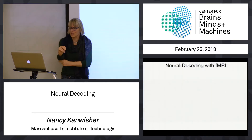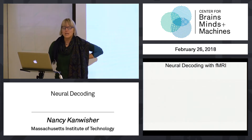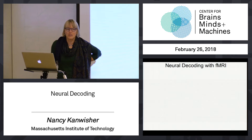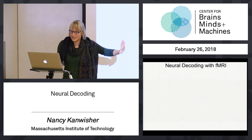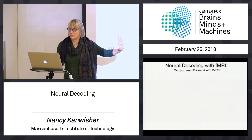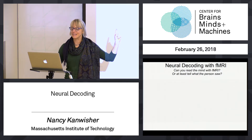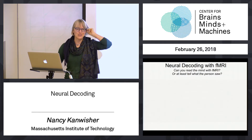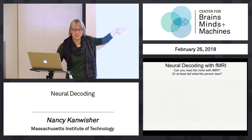Very quickly — if this doesn't work, we'll go over it again later. The idea is we want to be able to do neural decoding with functional MRI. This is just a variant of what I already showed you. More generally: can you read the mind with functional MRI? Or at least, can you tell what the person was looking at to produce that functional MRI data? That's the low-tech version of this we're going to ask.